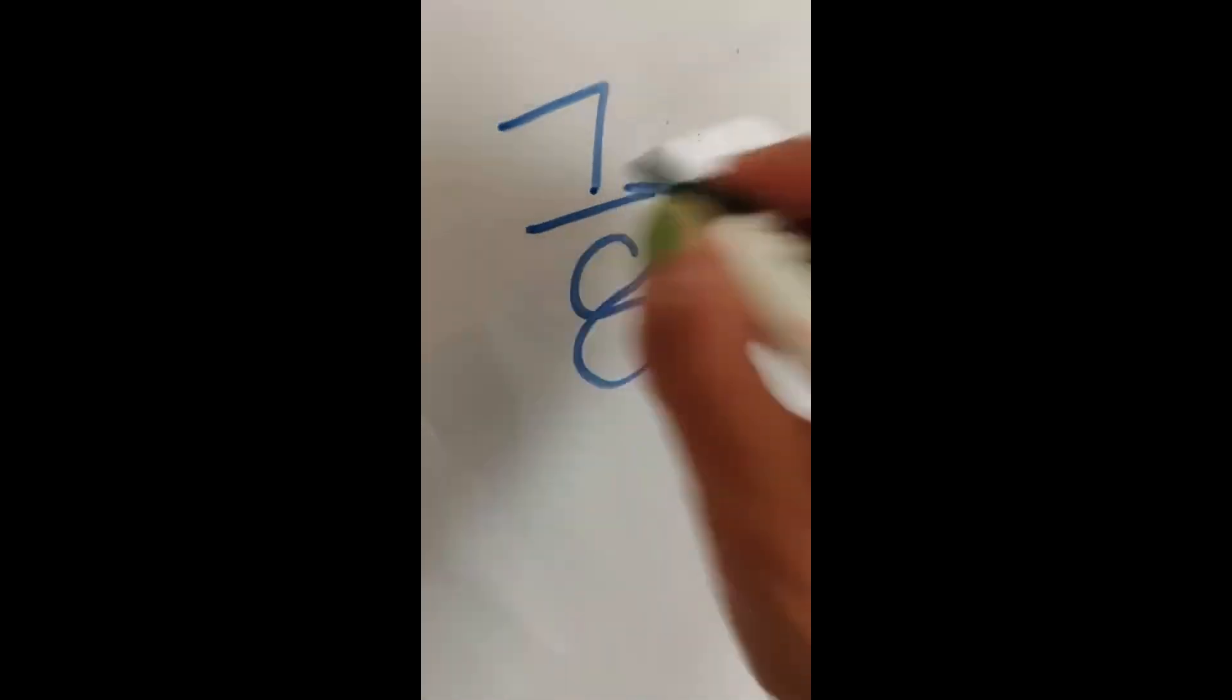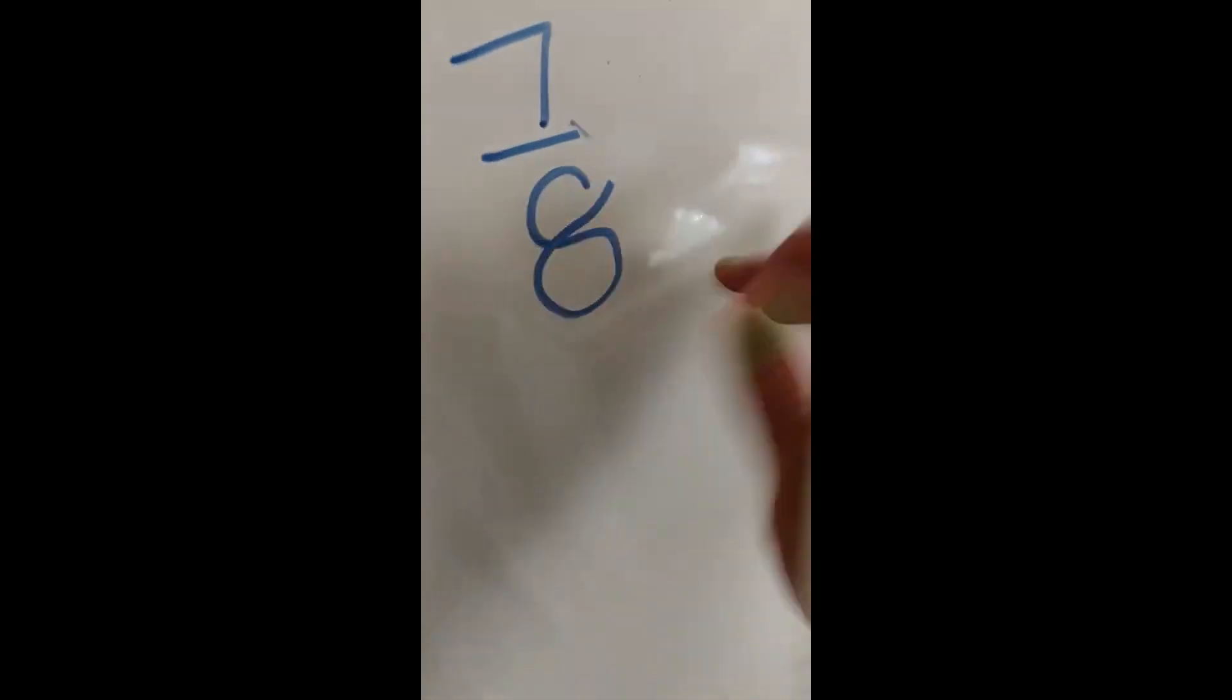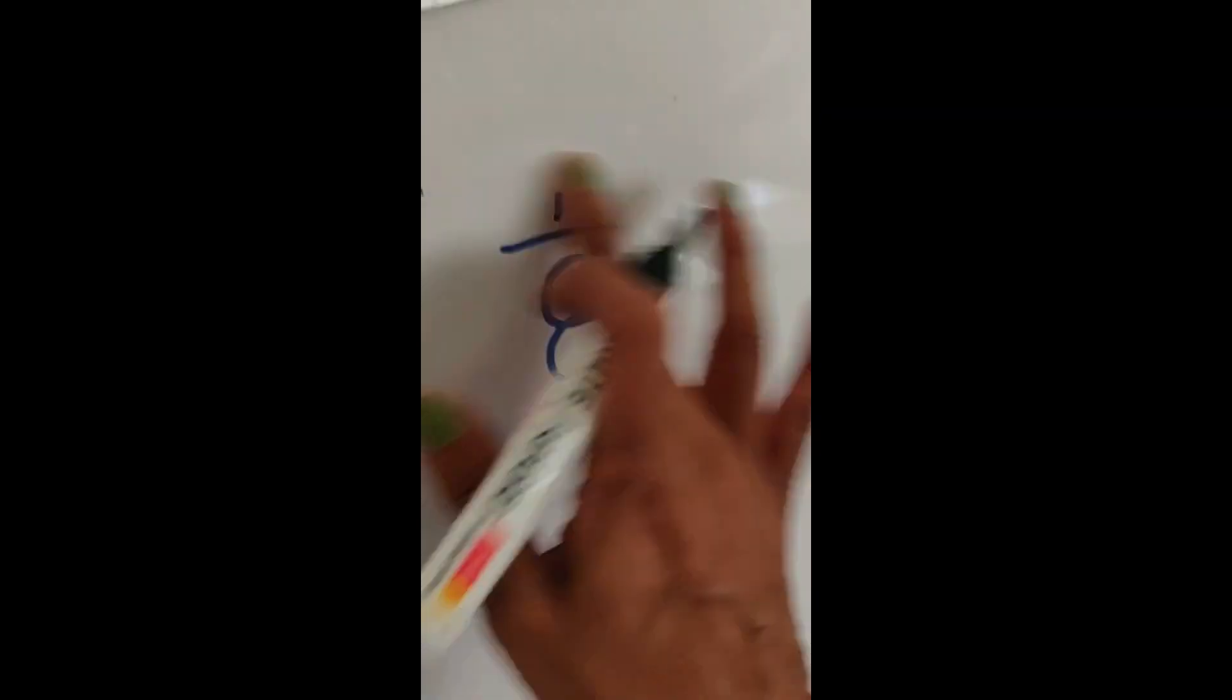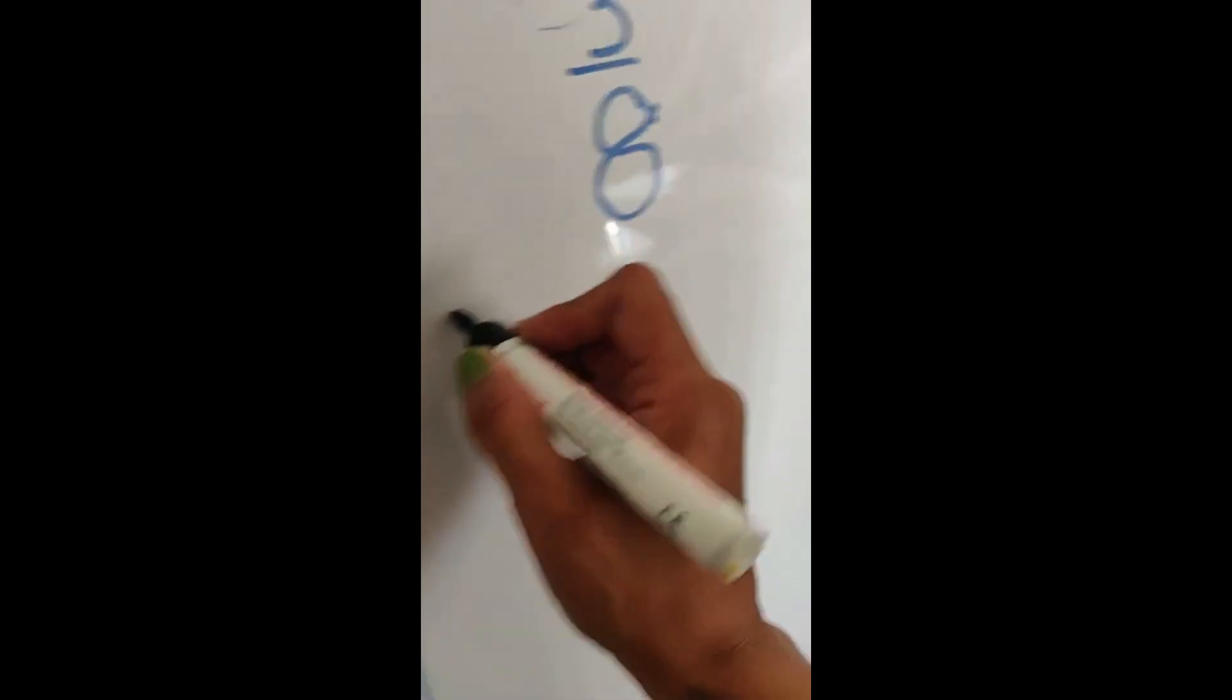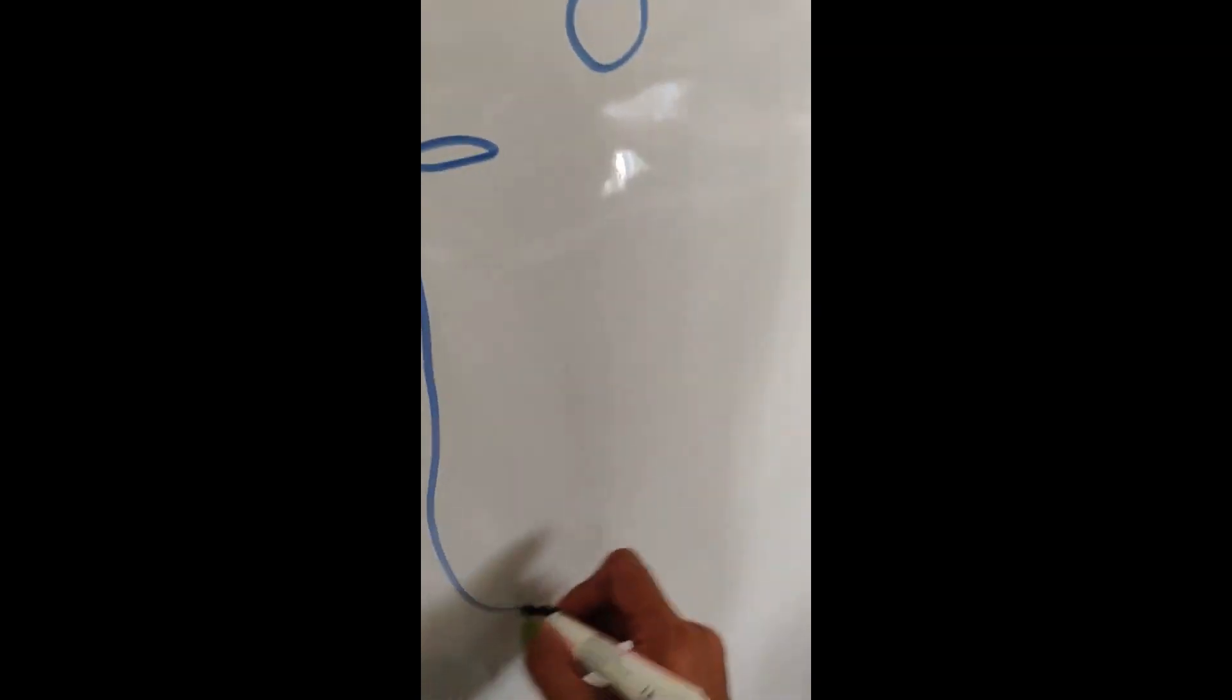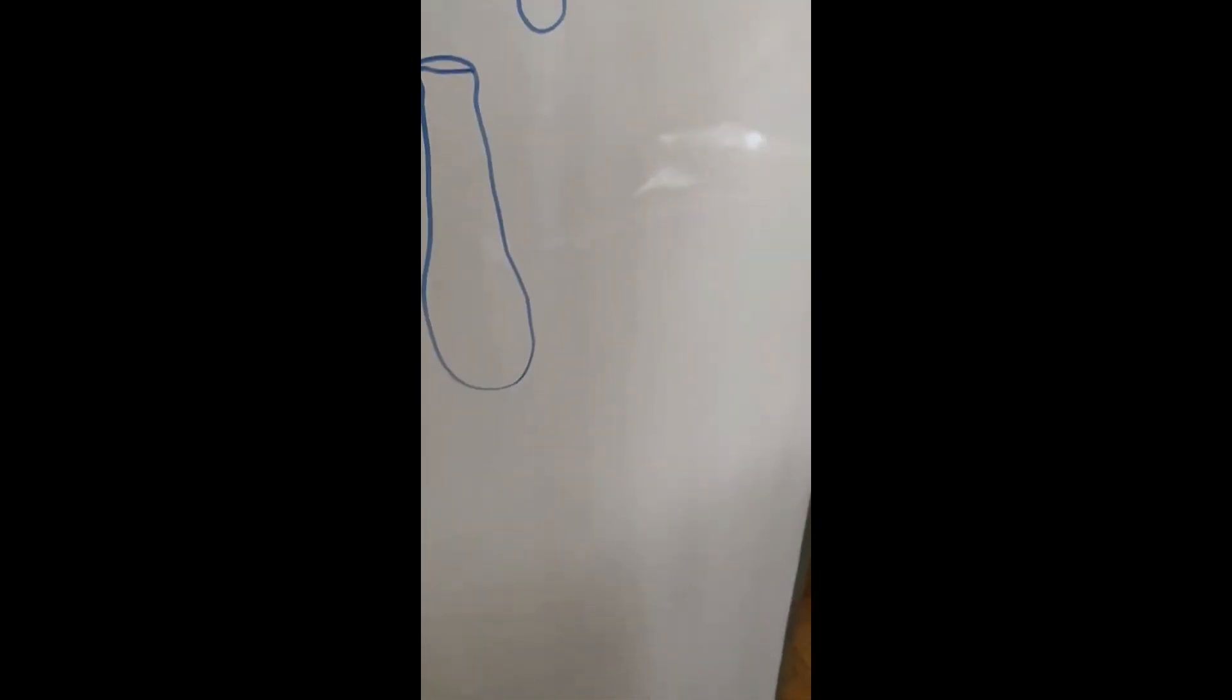Now similar question I will ask you. Don't go by these numbers. I mistakenly wrote them with permanent marker. We will use this side of the board. You had 7 eighth, or let us say, let us not make it 7 eighth, let us make it 3 eighth of coke. Which means if the coke bottle had 8 glasses of coke, how many glasses of coke you drank?